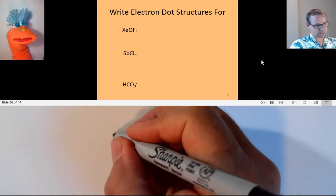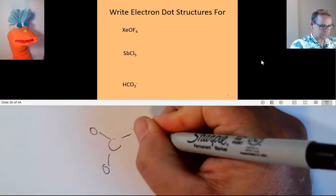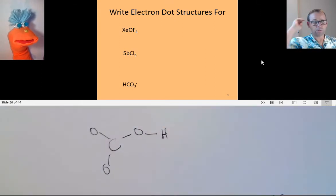So how do we draw the Lewis dot structure for a bicarbonate ion? Well, we start off the same way, central atom, and that's about all. That's the same. Because after that, we have to recognize that this is the polyatomic ion of an oxyacid. In other words, when hydrogens are on polyatomic ions, they're interacting through the oxygens. The oxygens are going to be around the central atom, but the hydrogen is going to be coming off of one of the oxygens. All right?